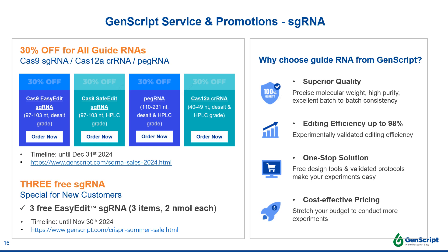Currently, GenScript is running a promotion for our guide RNA products: 30% off for all guide RNAs, including Cas9 sgRNA, Cas12a crRNA, and pegRNA, with a deadline of December 31st, 2024. We also offer three free guide RNAs for any new customers, with a deadline of November 30th, 2024 — please take this opportunity to try our guides. GenScript is very confident about the quality of our guide RNA products. We have an excellent record for batch-to-batch consistency, with high purity and high editing efficiency — we can achieve up to 98% in the cell types and target loci we've tested. We provide a one-stop solution with not only guide RNA but also other CRISPR reagents required for CRISPR knock-in experiments, and our products are cost-effective to help you stretch your budget and conduct more experiments.